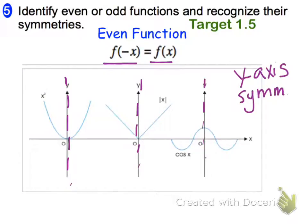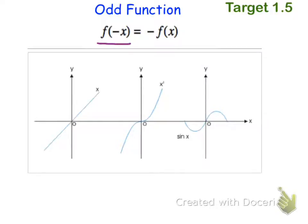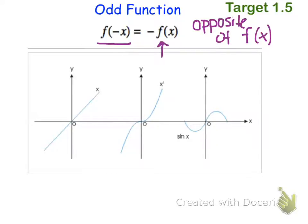Even functions are symmetrical over the y-axis — you can fold them over the y-axis and see the symmetry. If a function is odd, when you plug in negative x, you get out the negative of the entire function — all the signs switch, you get the opposite function. Odd functions are symmetric over the origin.